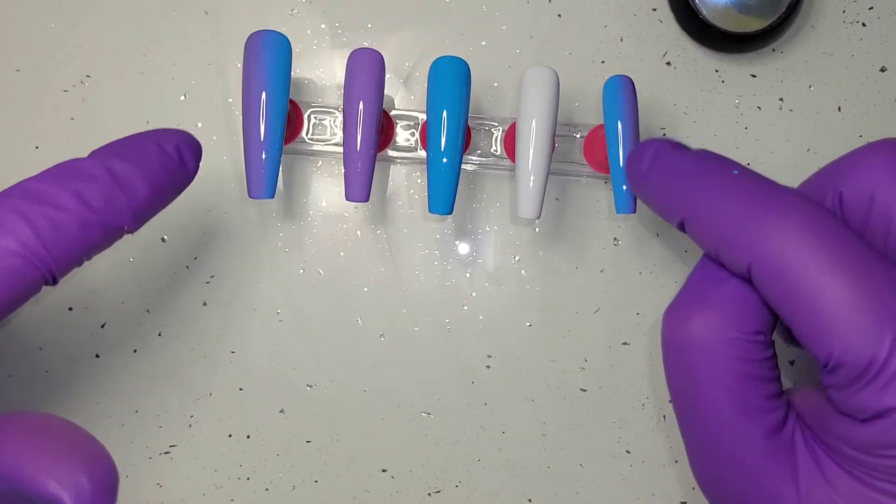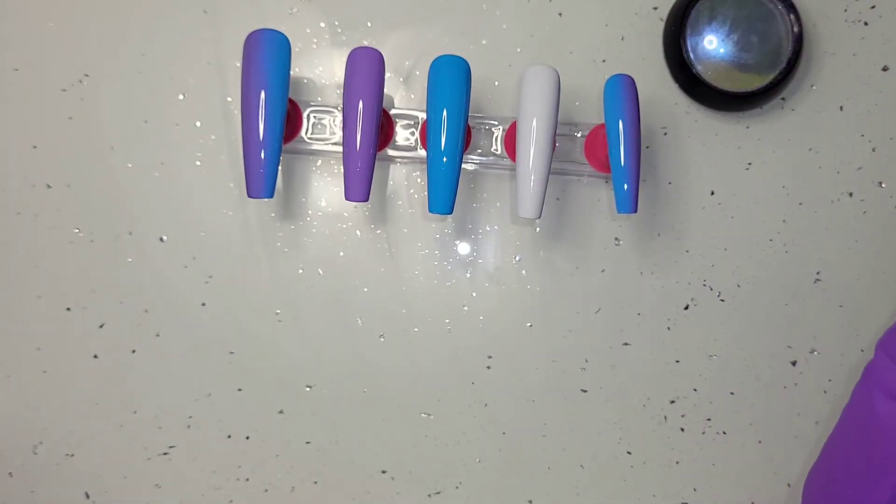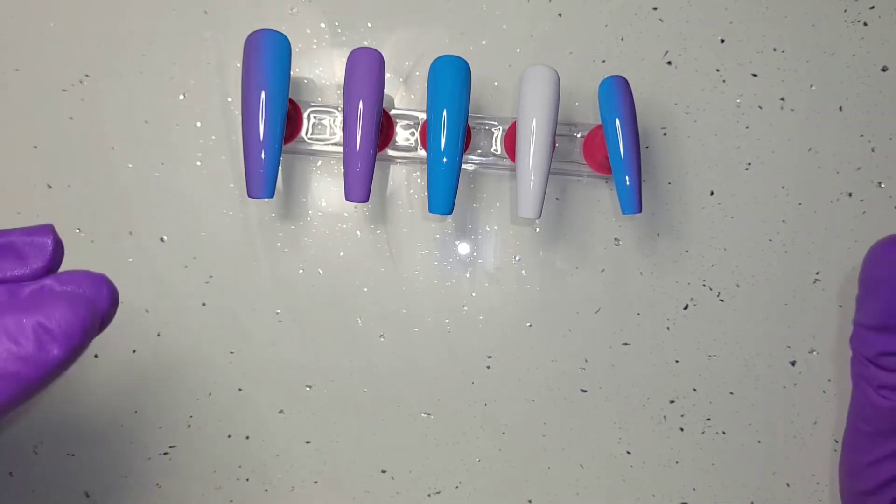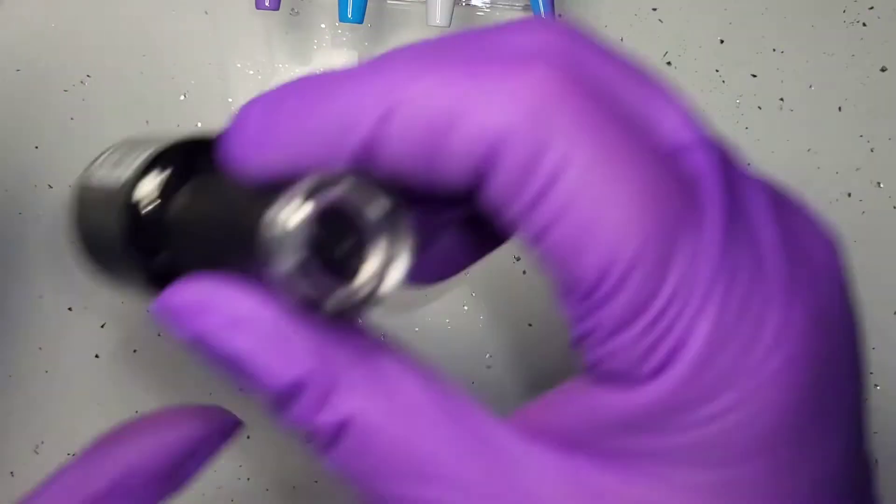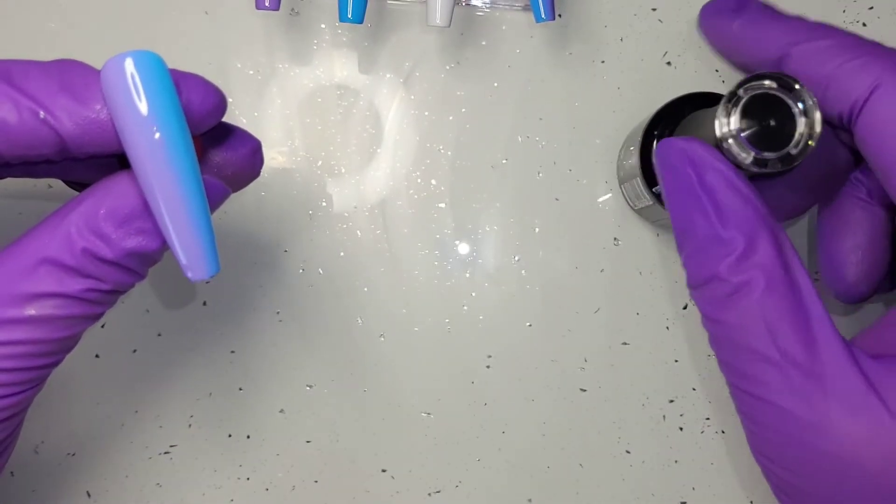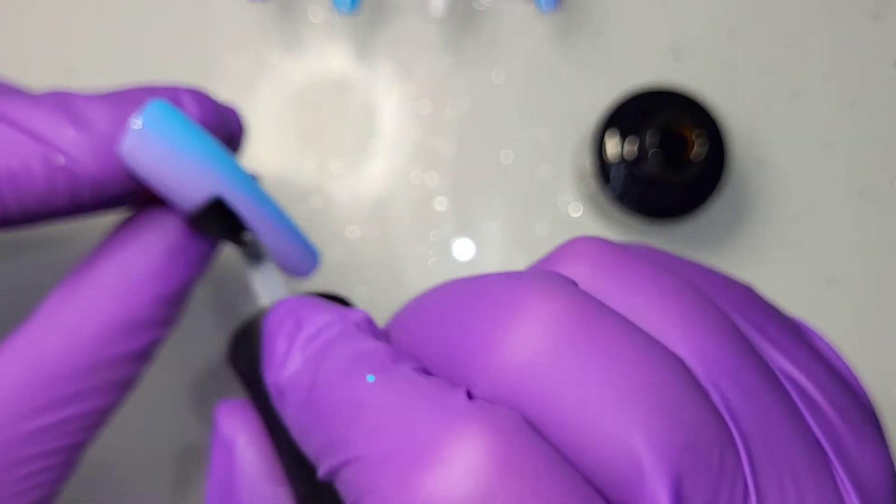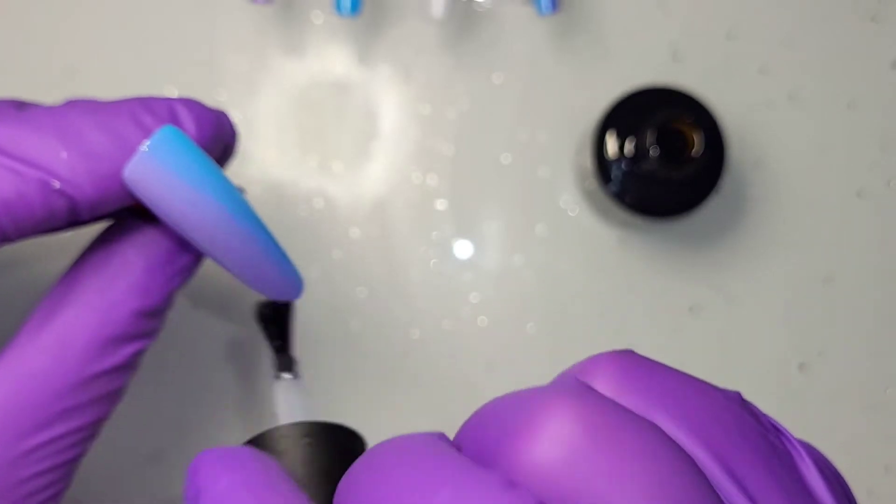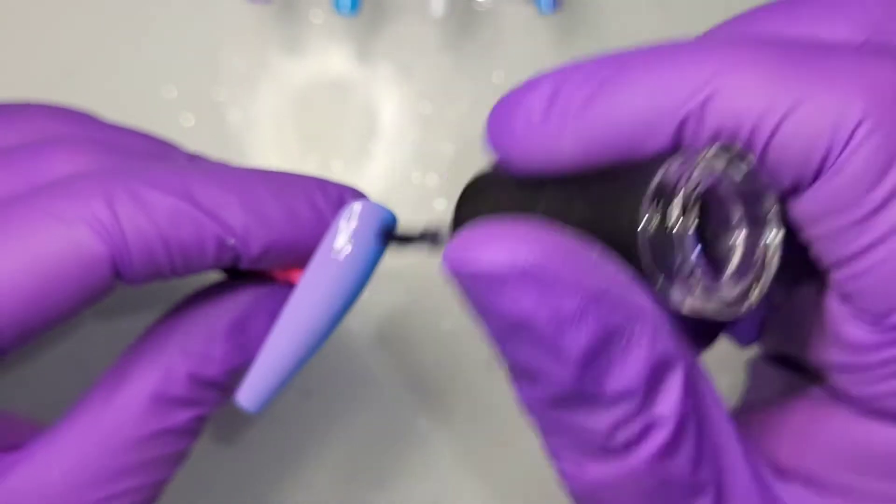I've always put top coat on, cure it, and then rub the chrome powder in. But everywhere I've seen, they just put it straight onto the tacky layer. I tried that with the silver one, but it just makes it silver, not chrome. So I'm going to do what I normally do - top coat, cure it, then rub the chrome powder in. Is there a different way? Do you do it differently?